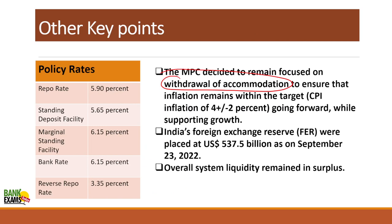Accommodative monetary policy is in the news because central banks and governments all around the world are withdrawing it. The US is increasing its interest rates, and in India rates are also increasing. The MPC decided to remain focused on withdrawal of accommodation. In the future, you will see hikes in FD rates, home loan rates, and consumer loan rates — all to control inflation.